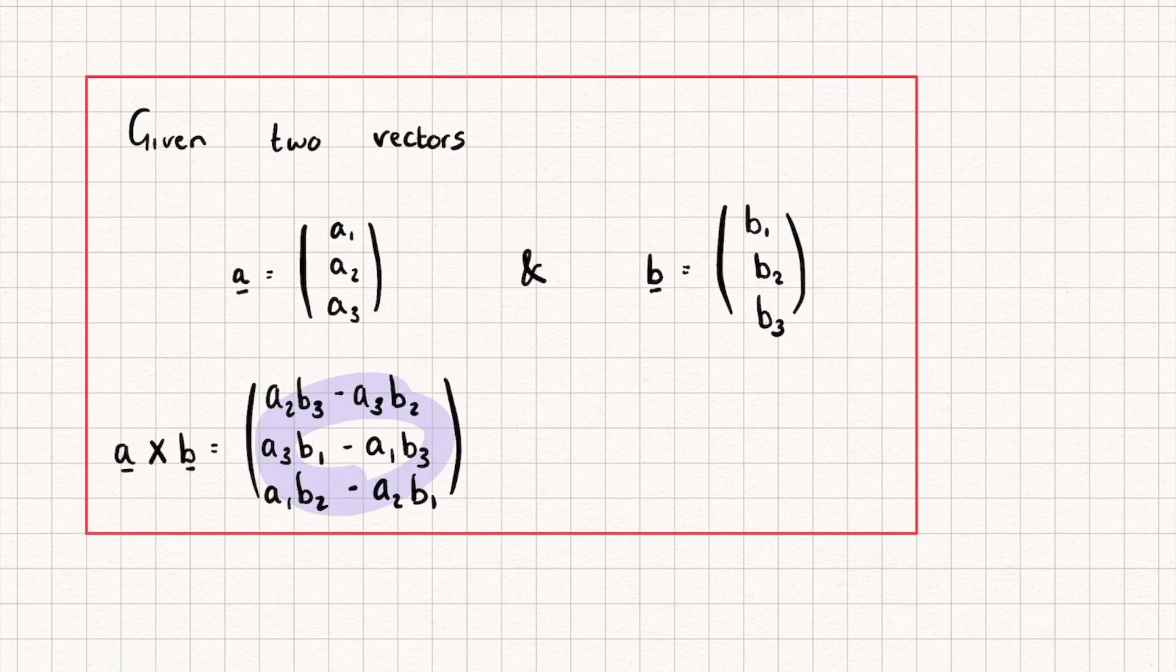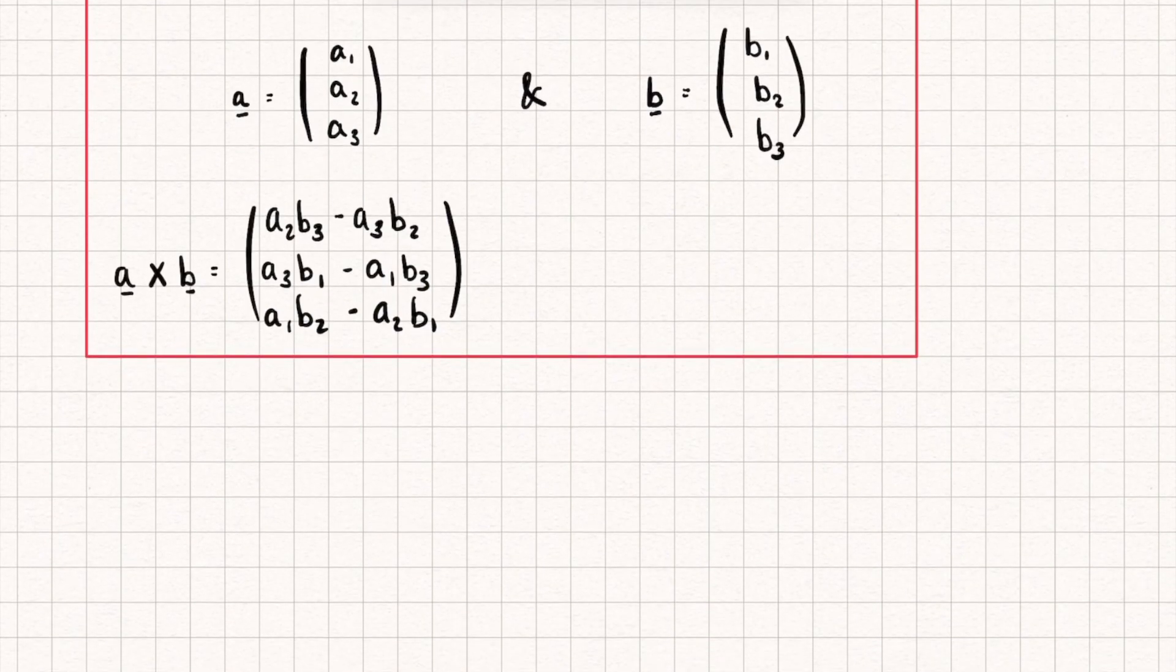Now this new vector that we get has a very special property where it is perpendicular to both vector a and also vector b. And I'm going to draw a nice diagram, hopefully to demonstrate this.